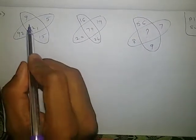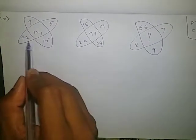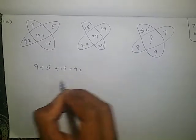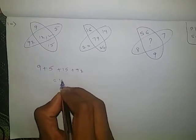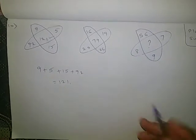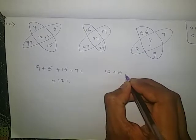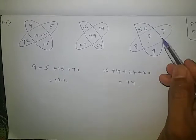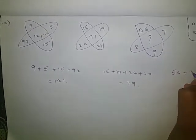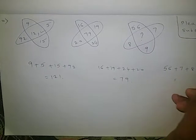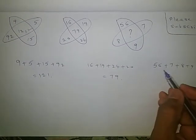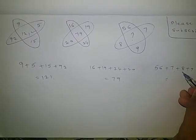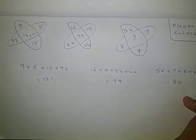Okay, now all the outside numbers: 9 plus 5 plus 15 plus 92 — adding gives the middle number 121. Same for the second one: 16 plus 19 plus 24 plus 20 is 79. Now do the same for the last one: 56 plus 7 plus 8 plus 9. 56 plus 7 is 63, plus 8 is 71, plus 9 is 80. So the missing number is 80.